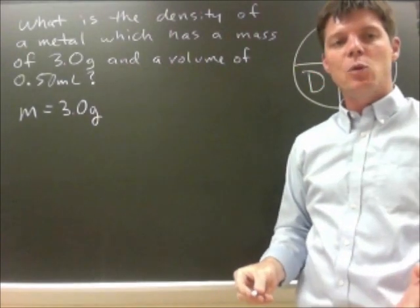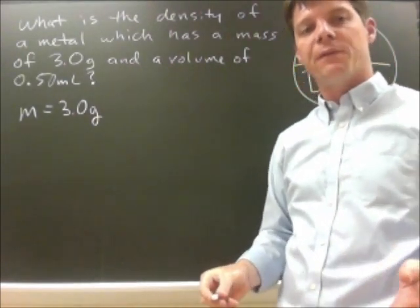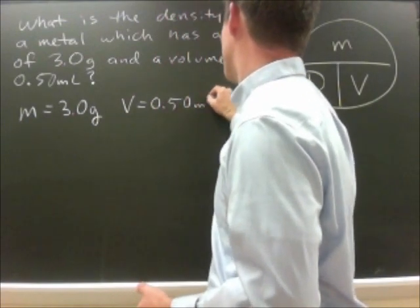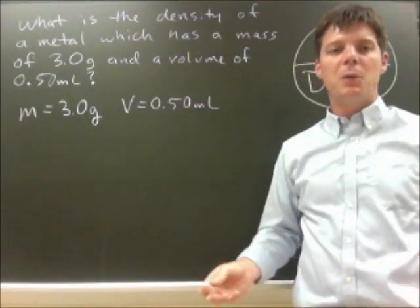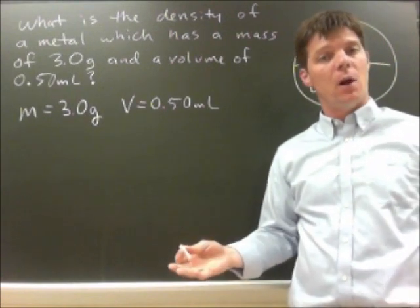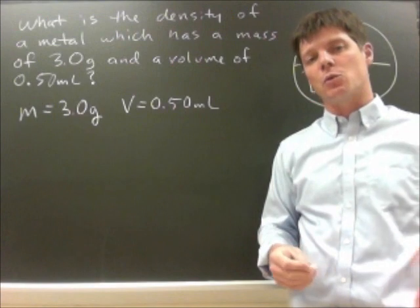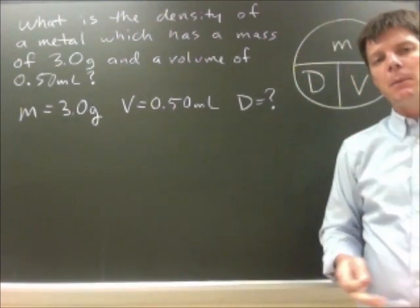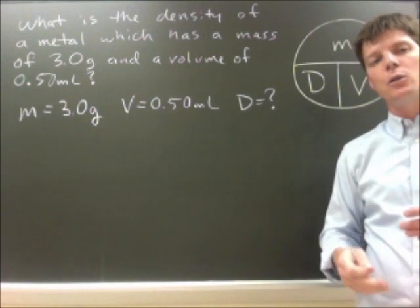The other known value was the volume. This was 0.50 milliliters. And in this problem again I'm trying to solve for the density which is my unknown, so I'm going to go ahead and just write D equals question mark.